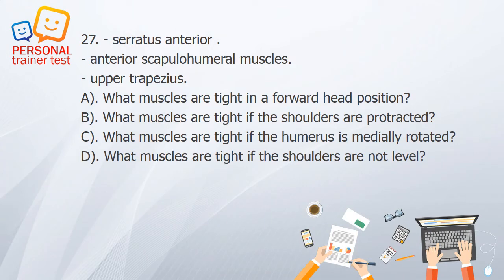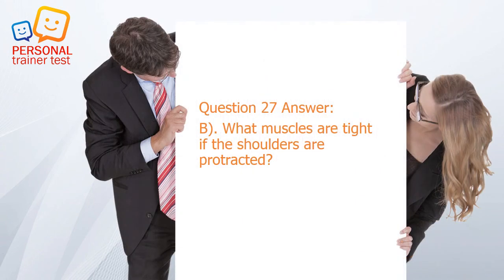Question 27. A. What muscles are tight in a forward head position? B. What muscles are tight if the shoulders are protracted? C. What muscles are tight if the humerus is medially rotated? D. What muscles are tight if the shoulders are not level? Answer: B. Serratus anterior, anterior scapulohumeral muscles, and upper trapezius are tight if the shoulders are protracted.